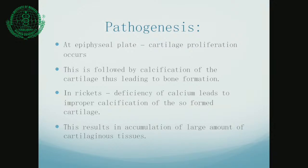What is the pathogenesis? Bone formation basically takes place by endochondral ossification. Cartilage first forms, then undergoes calcification — and this process of calcification is the main pathogenic process affected in rickets. There is an epiphyseal plate where cartilage proliferation occurs, followed by calcification leading to bone formation. In rickets, deficiency of calcium or vitamin D leads to improper calcification, causing accumulation of large amounts of cartilaginous tissue. This gives an important picture on the x-ray known as epiphyseal widening, appearing radiolucent since calcium is not deposited.